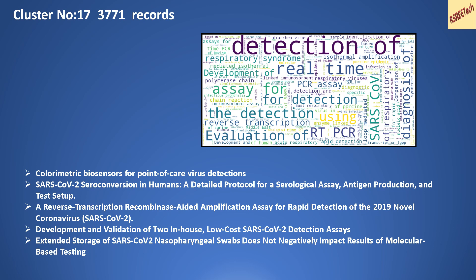Cluster number 17 has close to 3,800 records. Looking at the word cloud formed from titles in this cluster, words like 'detection', 'real-time PCR', 'assay', and 'RT-PCR' are highlighted. Going back to the titles manually, you see entries about detection assays and reverse transcription. This group of documents is related to detection methodologies.